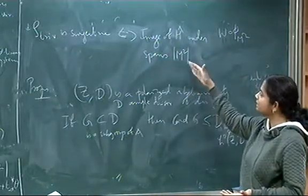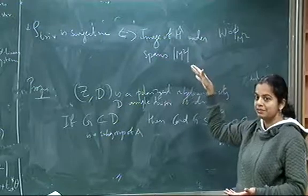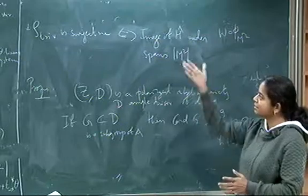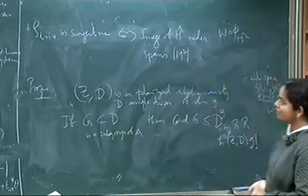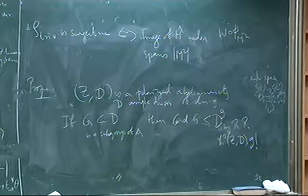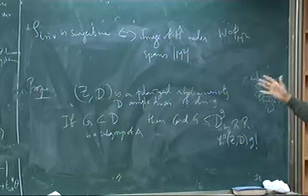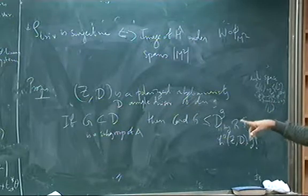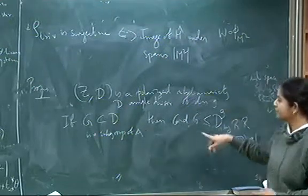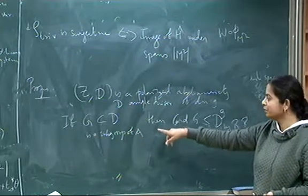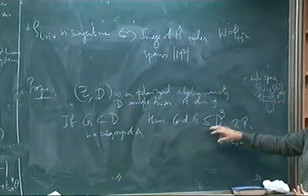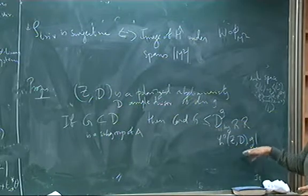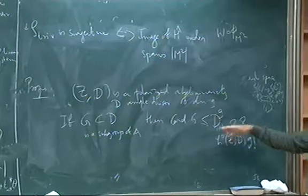This is same as saying that this spans M square, so if it does not span, so that means it is contained in a hyperplane section inside this linear system of M square, so that hyperplane section restricts to an ample divisor on your bilinearity B, but essentially H hat is a group actually, a finite group which is contained in a divisor,